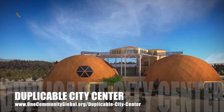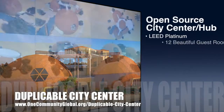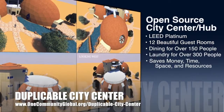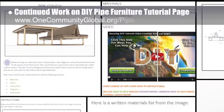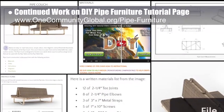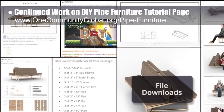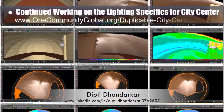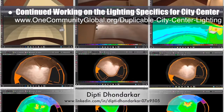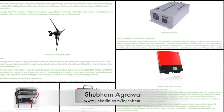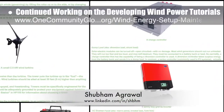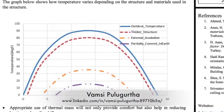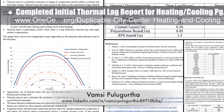One Community is also creating an open source duplicable city center designed to be LEED Platinum certified, provide 12 guest rooms, dining for over 150 people, and laundry and recreation space for over 300 people — all while saving money, time, space, and resources. This week, the core team continued work on the DIY pipe furniture tutorial page, creating seven new images for the diagram section, a collage for the instructions section, and working on adding text to all sections. Dipti Donderker, electrical engineer, continued her 39th week on lighting specifics for the city center, with this week's focus on lighting testing with the social dome. Shubom Agrawal, electrical engineer, finished his final round of image additions and references for the wind power tutorials. Bamsi Poligertha, mechanical engineer, completed the initial thermal lag report for the city center heating and cooling open source hub.